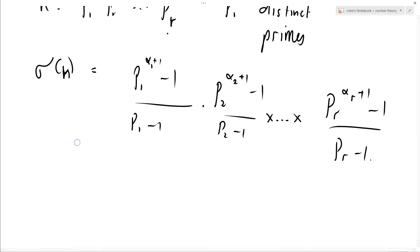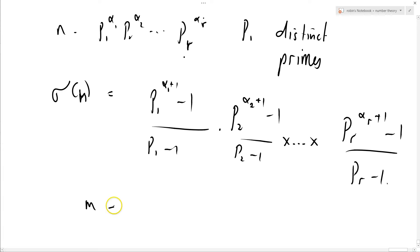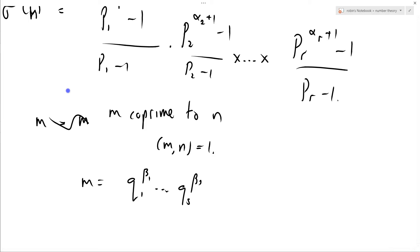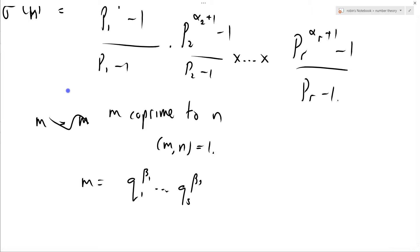And by the same logic as last time, if n equals that and m, and I want m coprime to n, so mn equals 1, then the prime factorization of m should be q1 to the beta 1 up to qs to the beta s, and by exactly the same logic as last screencast,